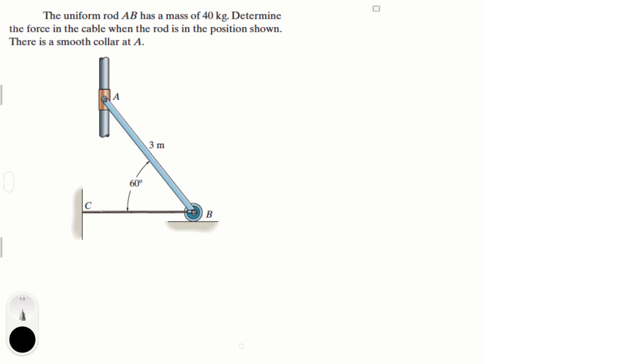Alright guys, let's do this problem that says the uniform rod AB has a mass of 40 kg. Determine the force in the cable when the rod is in the position shown and there's a smooth collar at A. The problem is very easy to do, so let's get to it.